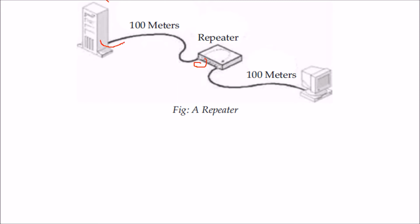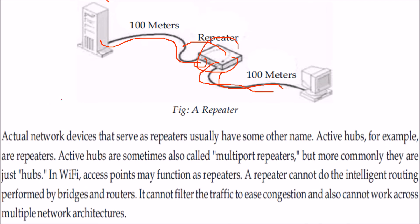For example, data is transmitted and after 100 meters it fades or loses energy. The repeater regenerates the signal and resends it so that it can again travel for another 100 meters.